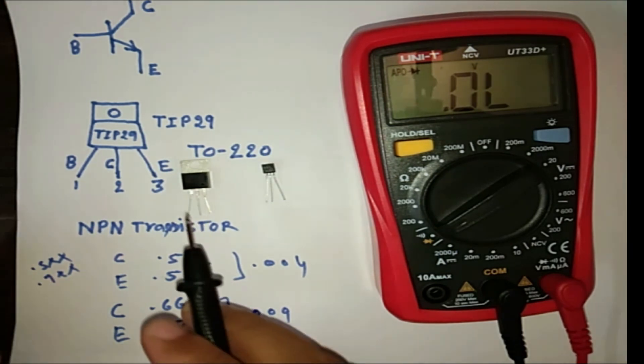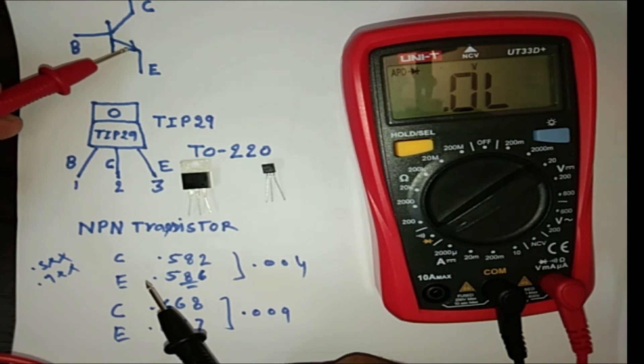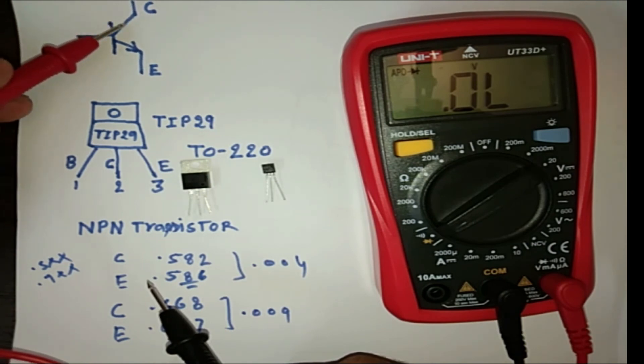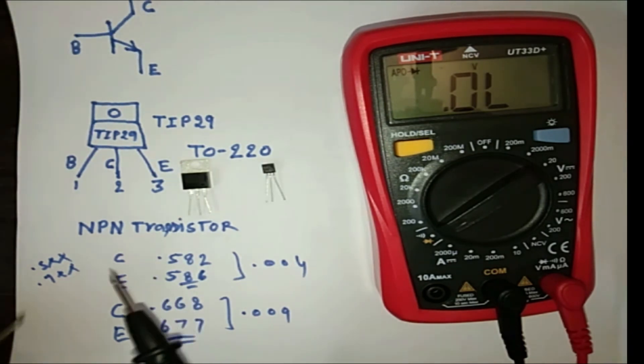So I hope you got this transistor. And this is the symbol of transistor. And emitter always arrow outside in NPN transistor. And in PNP transistor, it will be here. Emitter here and collector here. And arrow will be here inside.